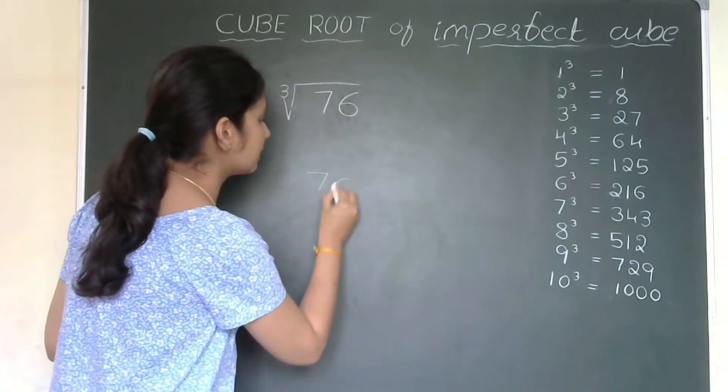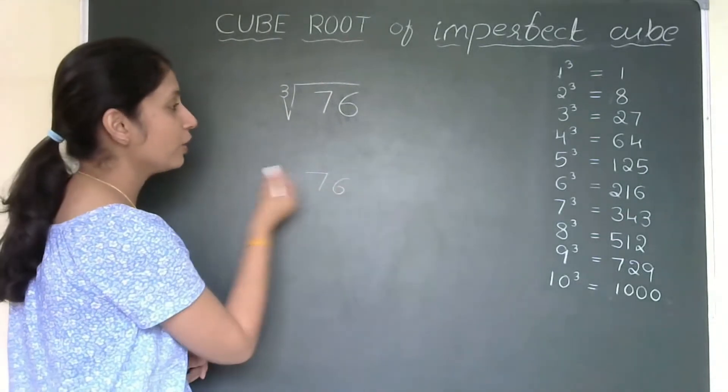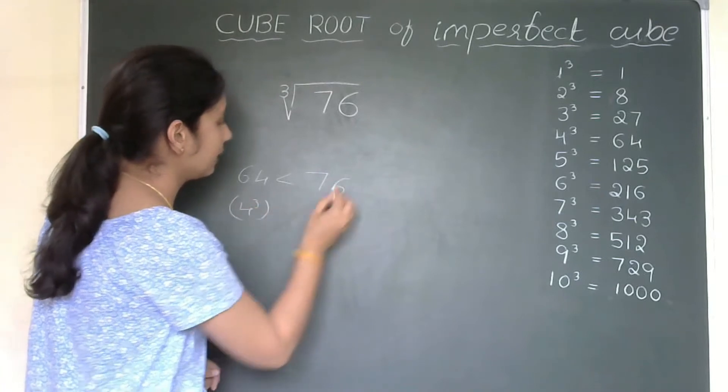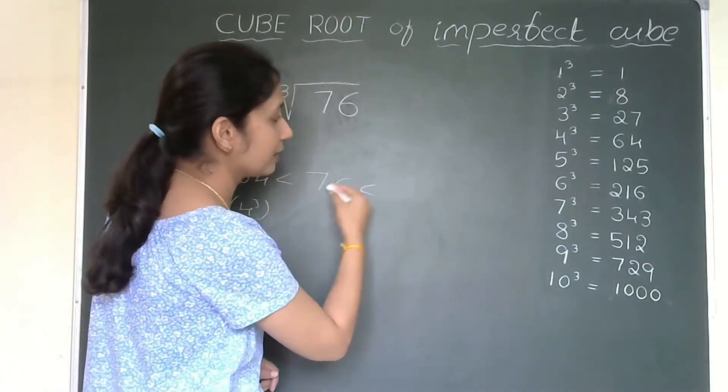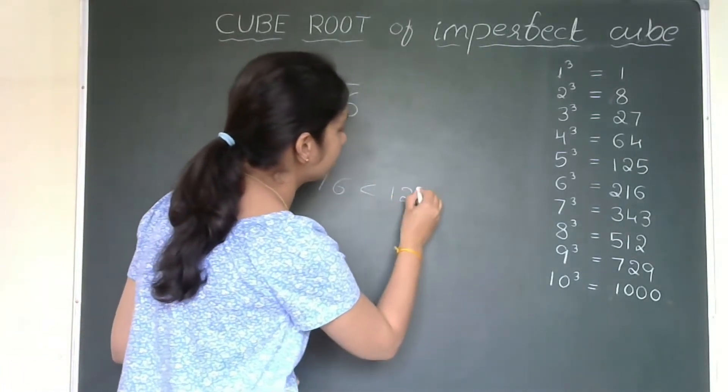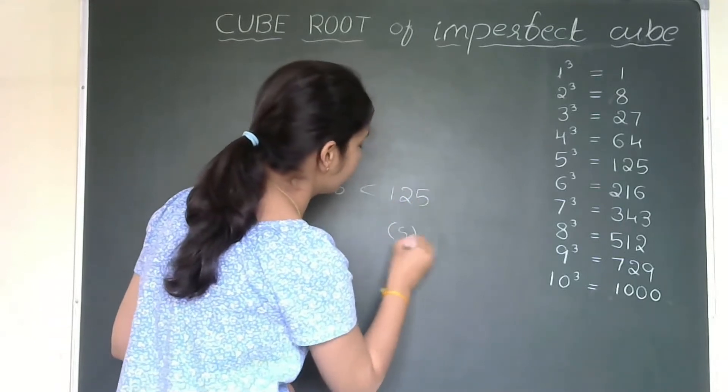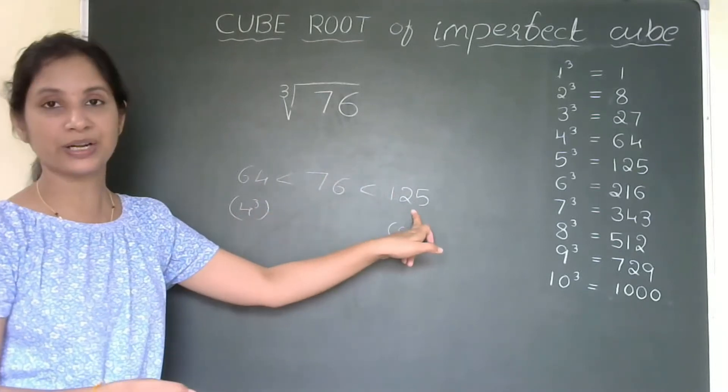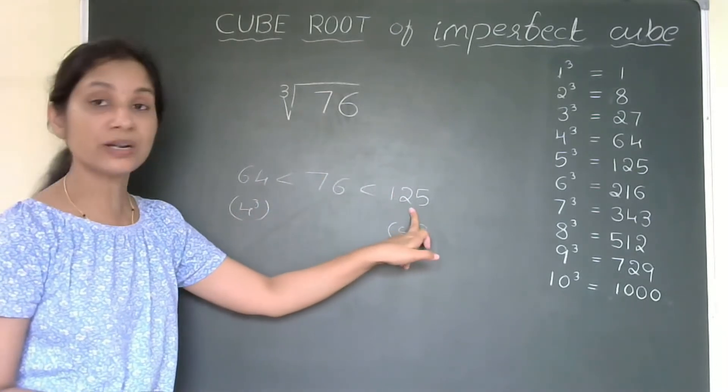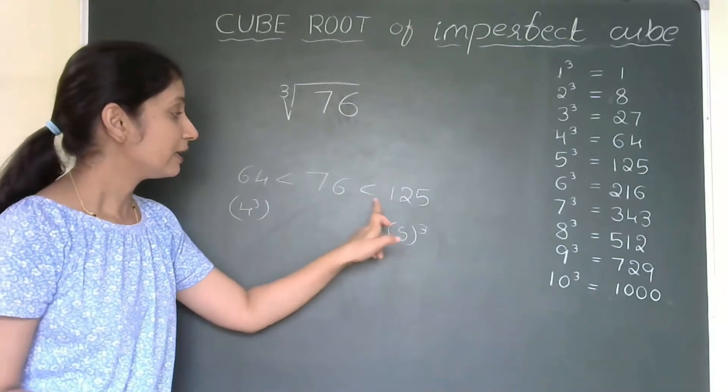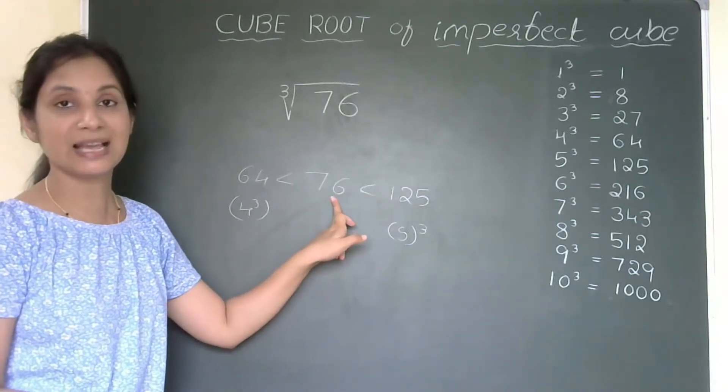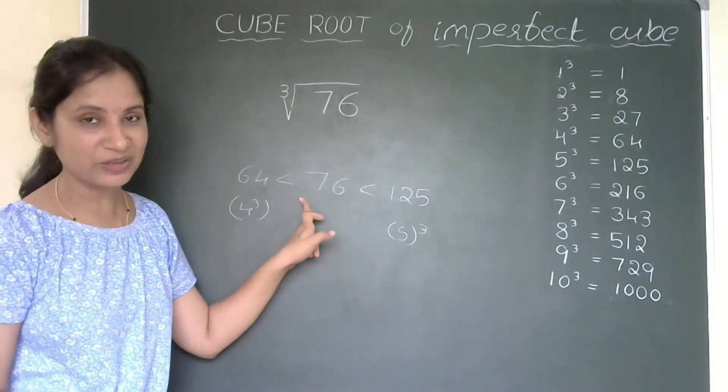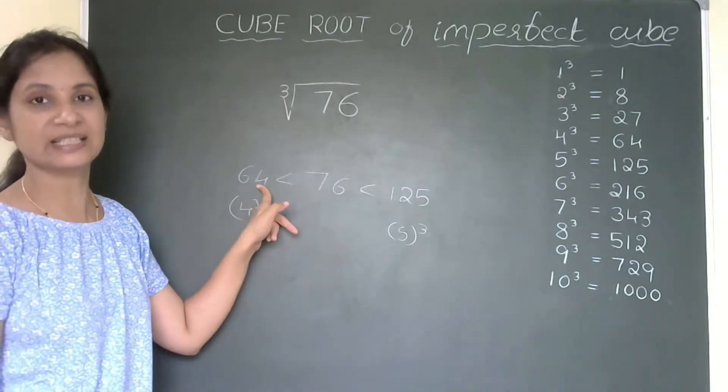So, how I will write? 76 is in between 4 cube is 64, and it is less than 125 which is 5 cube. Now, you will consider either 64 or 125. But if I consider 125, what will happen? Like it is much less than 125. If I consider 64, my work will be easy. So, I will take 64 only.